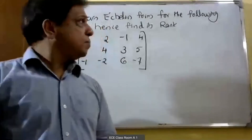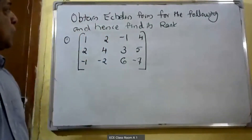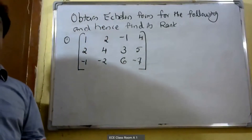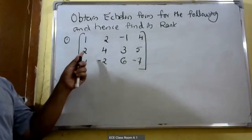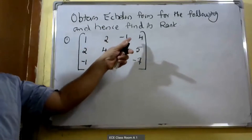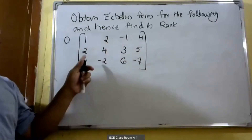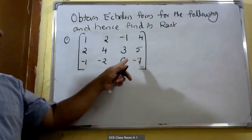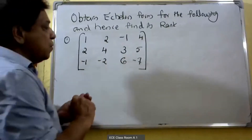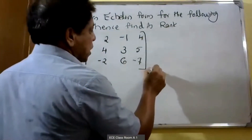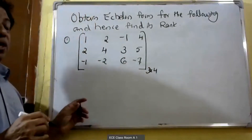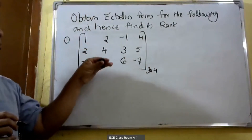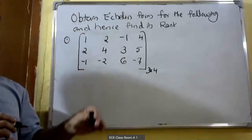Good morning students. Obtain the echelon form for the following matrix and hence find its rank. The first problem: 1, 2, minus 1, 4 / 2, 4, 3, 5 / minus 1, minus 2, 6, minus 7. Here we have three rows and four columns. First we have to find its echelon form, and from this echelon form we can easily find its rank.